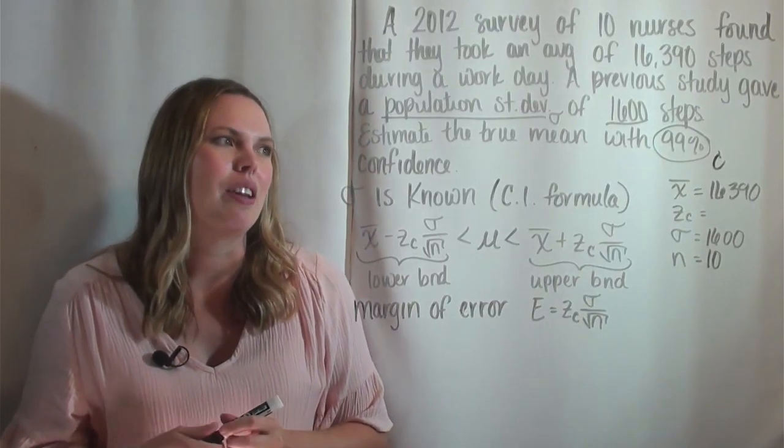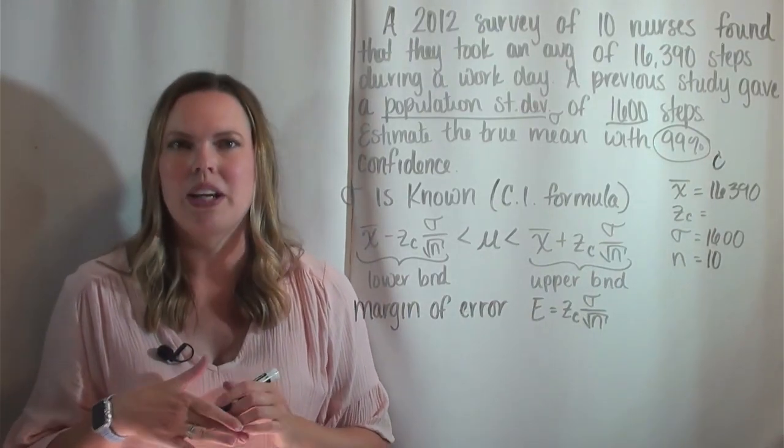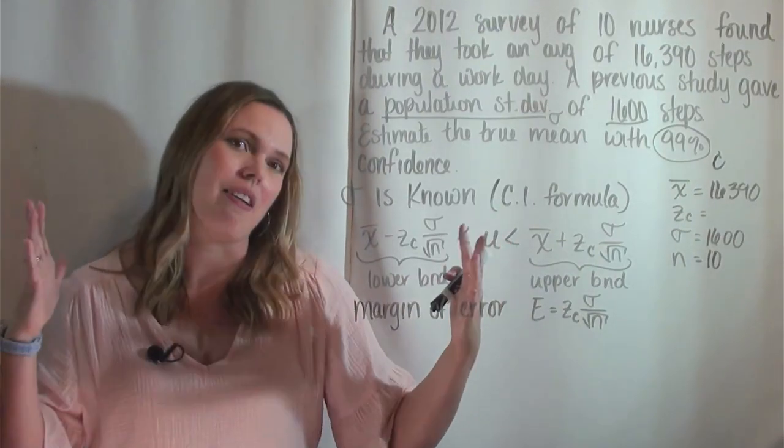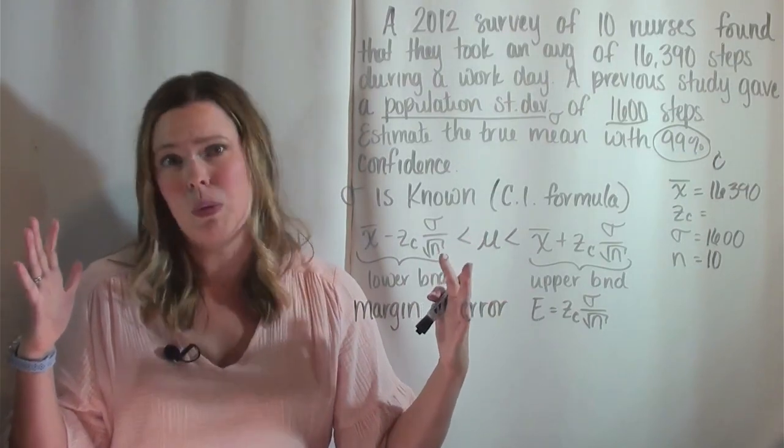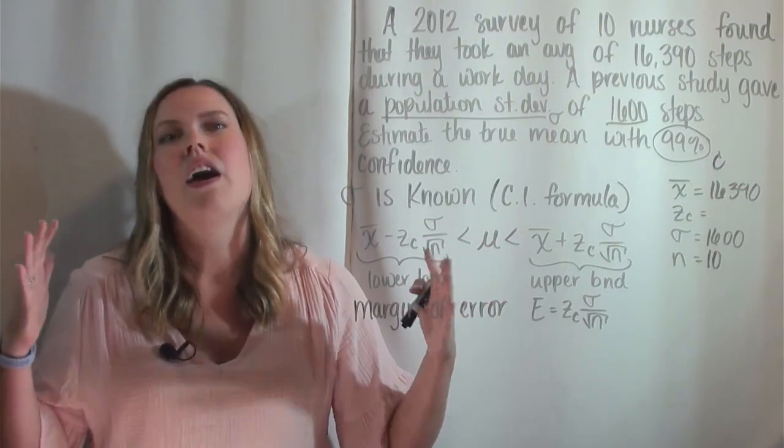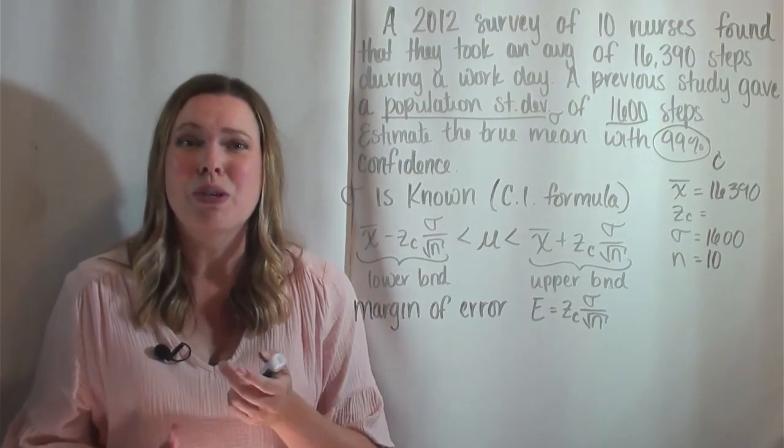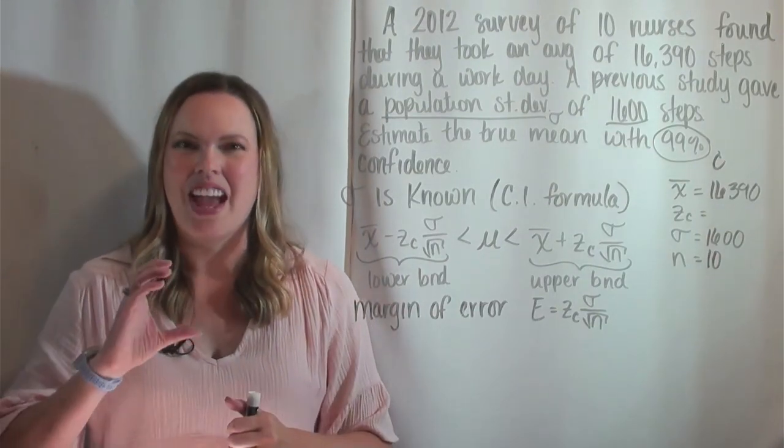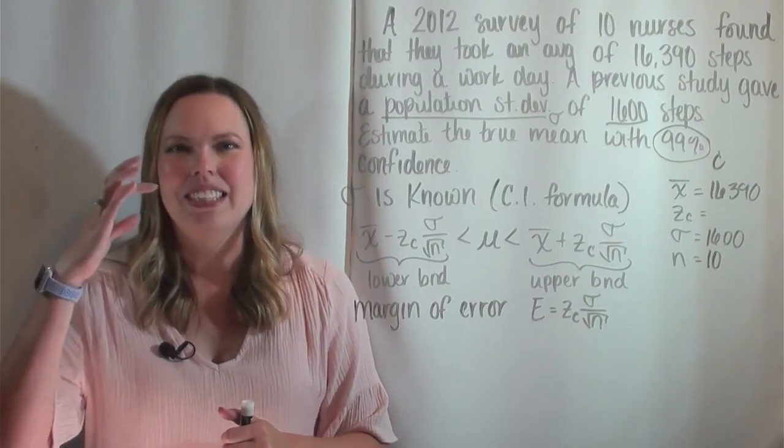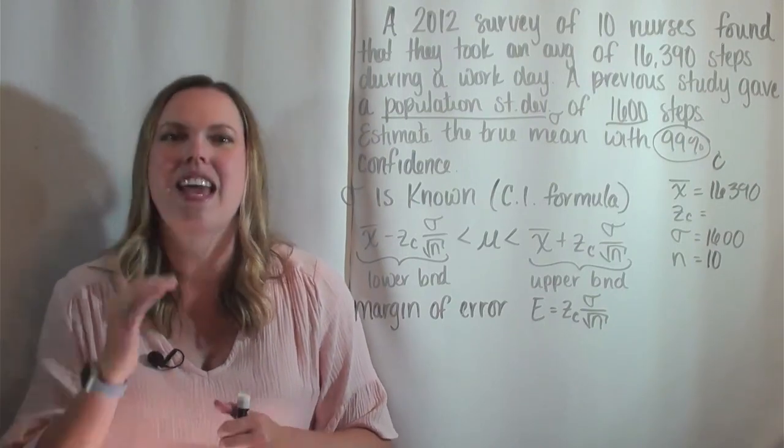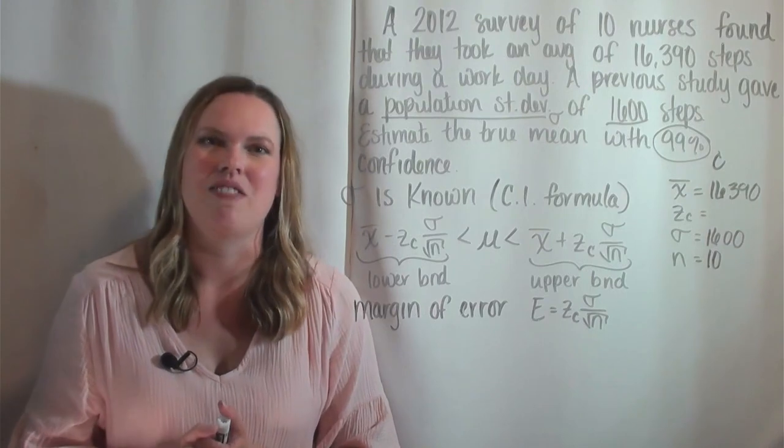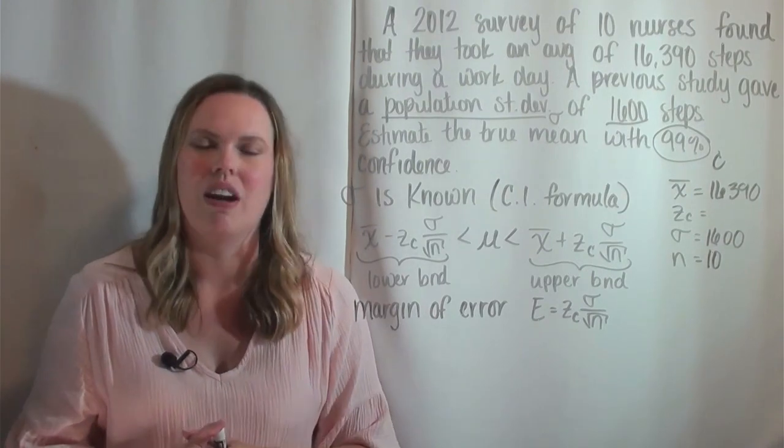And we're finding the z score that corresponds to an area of 99% or 0.99 on either side of the mean. Now you can do this with the normal distribution, but most normal distribution charts have a table as well that lists the c's and their corresponding z_c value. And so that's what we use in our class.